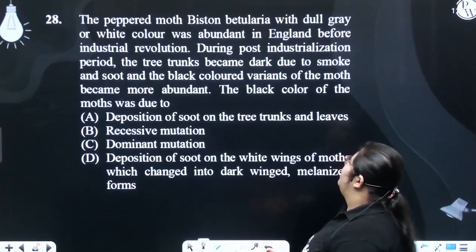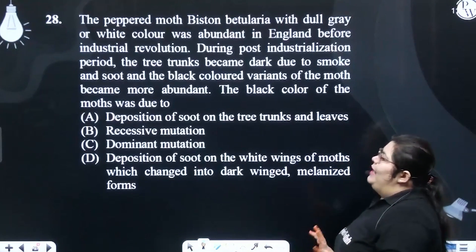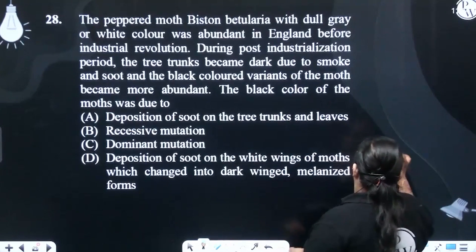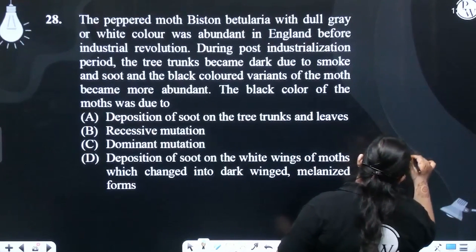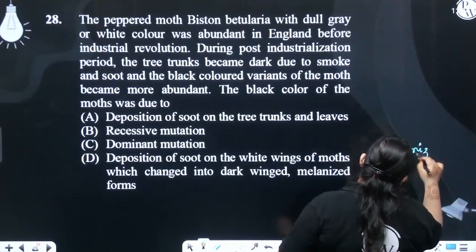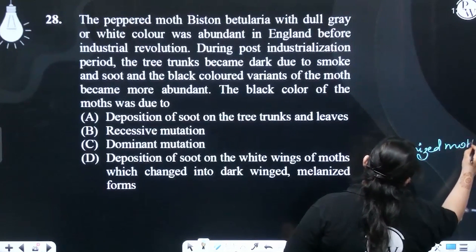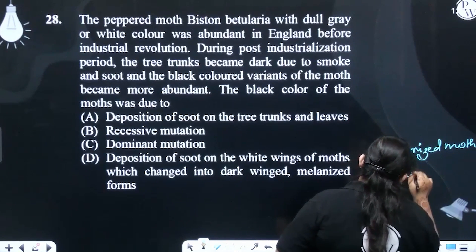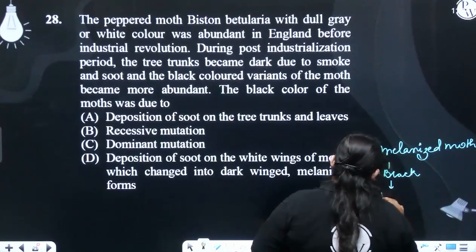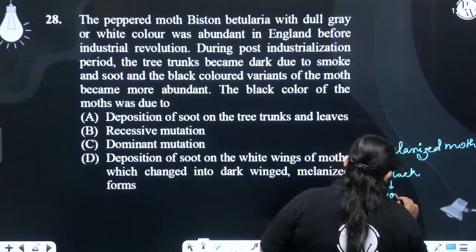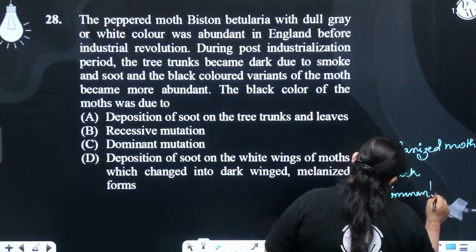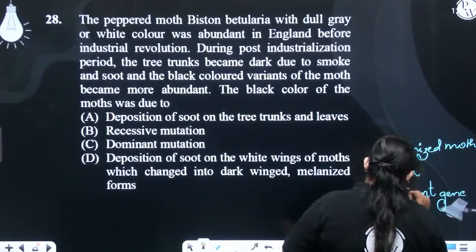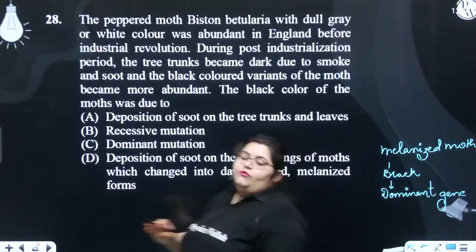The black color of the moth was due to the melanized form. The melanized moth was black in color, and it was due to the dominant gene — the black gene was the dominant gene.